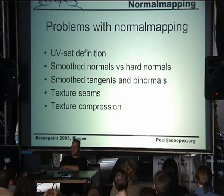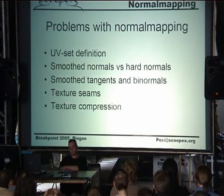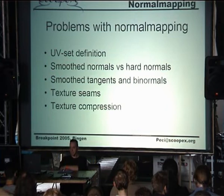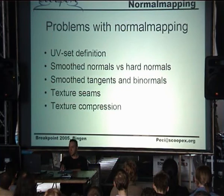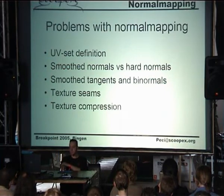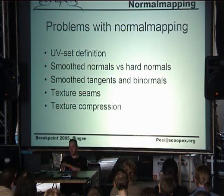The main topic I want to give you is: when I started with normal mapping, I thought it would just work out of the box — download a normal map shader in Render Monkey and it should work. But the problems are in the detail, because the tangent space highly depends on the UV set definition. There's also the question of what happens if the normals are not smooth — or the tangents — this will produce seams in the normal map. Then what happens on texture seams? And what about texture compression? Because we're using the normal map as a texture, and if you DXT1 compress them you get really bad artifacts.